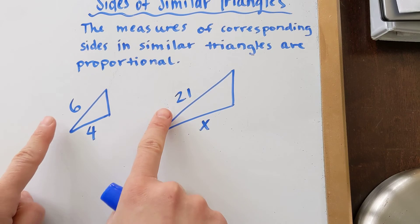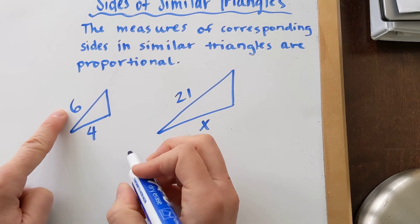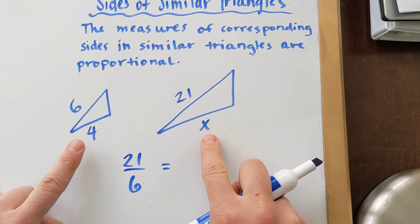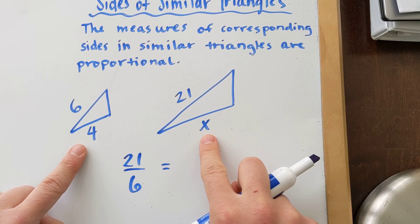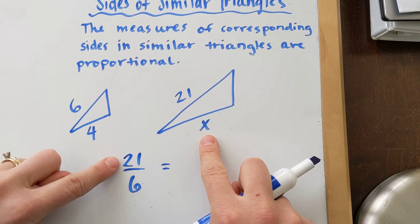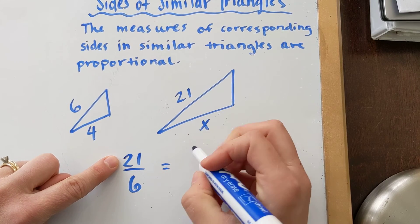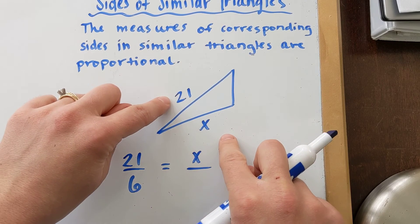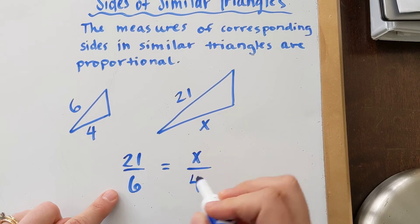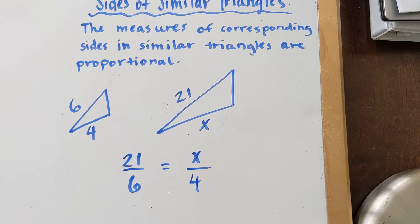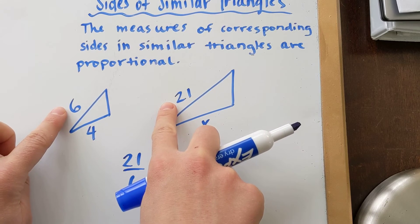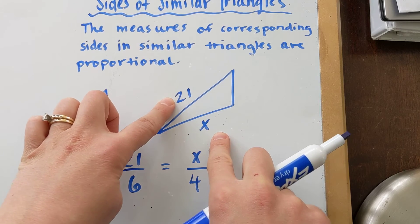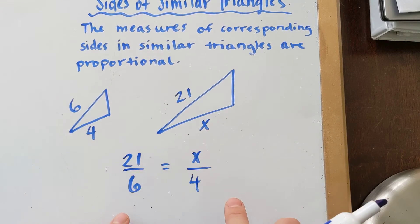We can use the ratios that we have based on the corresponding sides and we can figure it out. So let's take a look here. 21 and 6 are corresponding. So I am going to just set up that ratio, 21 divided by 6. And I am going to set it equal to the ratio here. Now, because I started with 21 in this ratio, I also want to start with x on the other ratio. So it looks like the numerators are coming from this triangle and the denominators are going to be coming from this triangle.